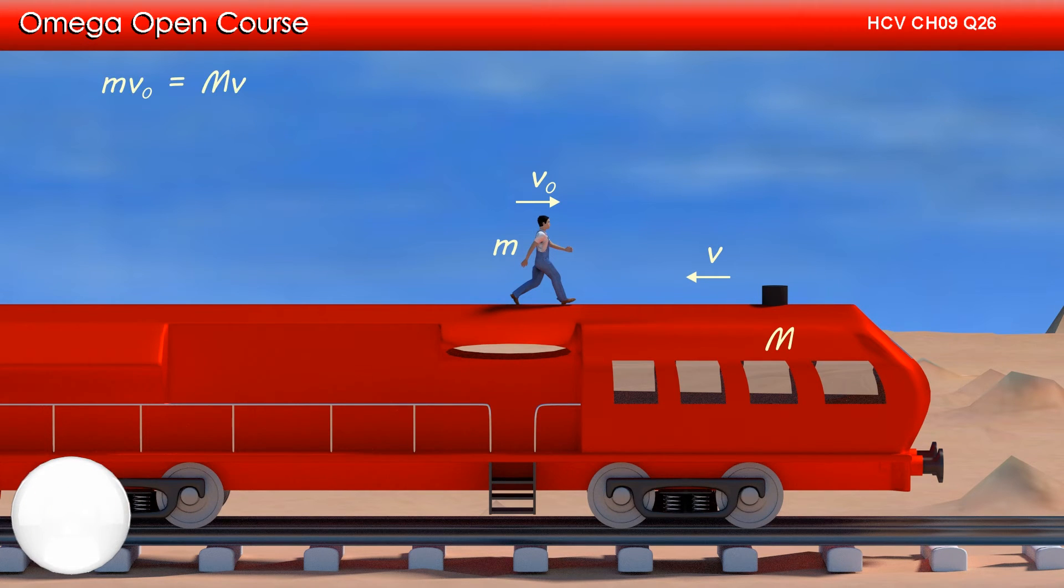Therefore, the momentum of the system must be conserved, or the magnitude of the momentum gained by the railroad car must be equal to the magnitude of the momentum of the man. Thus, mv0 must be equal to capital M into v. This implies v0 is equal to capital M v divided by m.